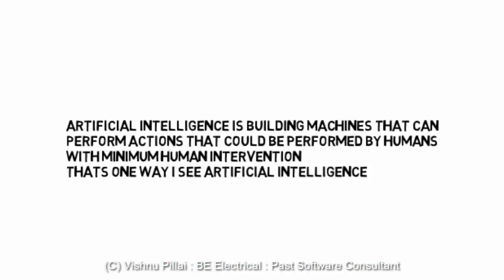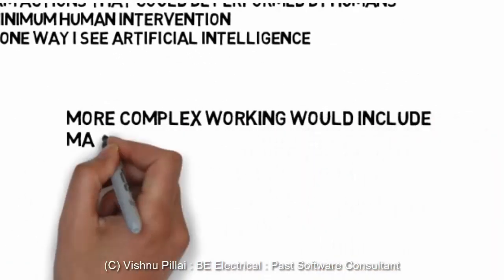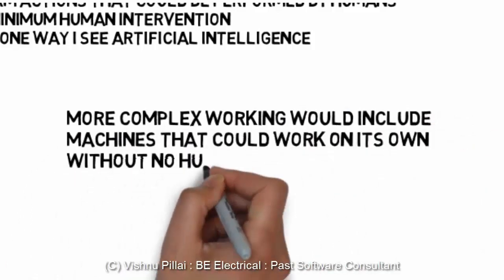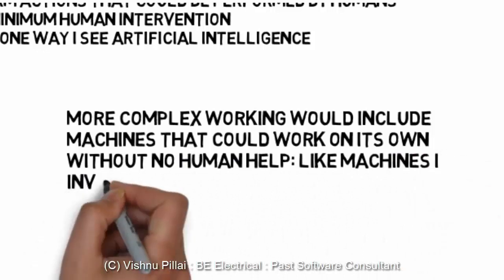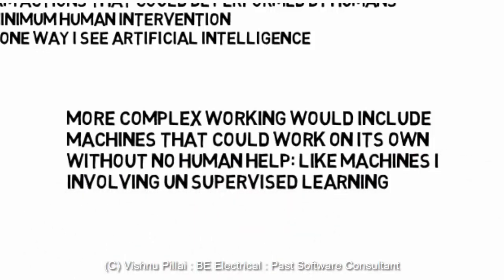You don't necessarily need to build physical machines — the artificial intelligence system in today's world could be virtually present in a computer program. These systems could mimic, in some way, the actions which could be done by a human, and that brings a level of intelligence to a machine. More complex working would include machines that could work on their own without human help, like machines involved in unsupervised learning.